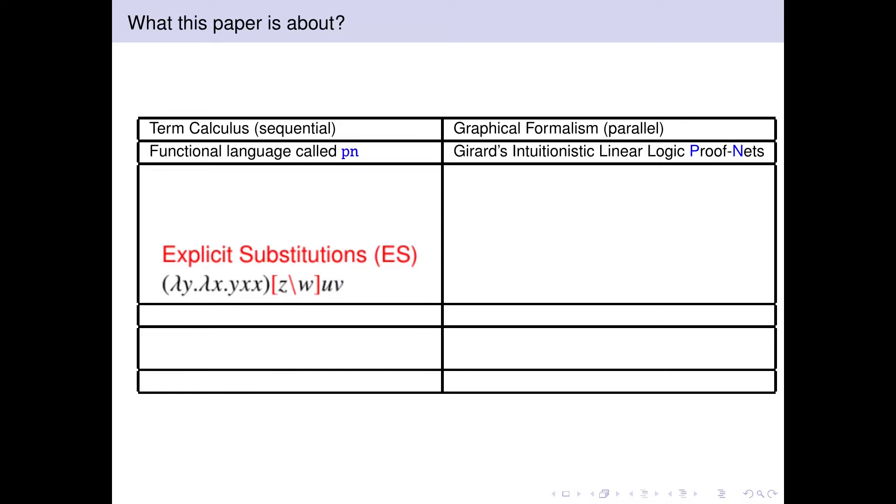The proof nets are graphs. I will not enter into details here, but you can see that they have boxes here drawn in red, which represent encapsulated pieces of code, used also to manage the resources of the graphical language in an explicit way.